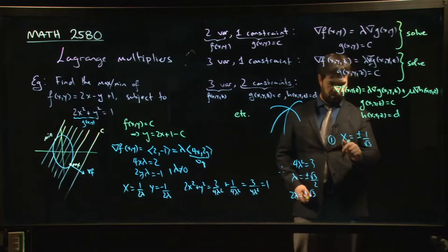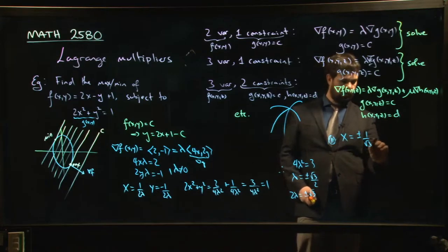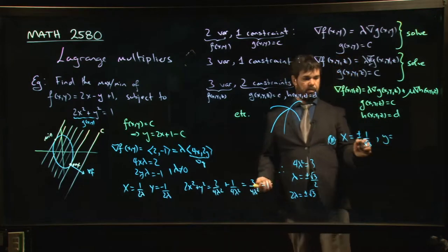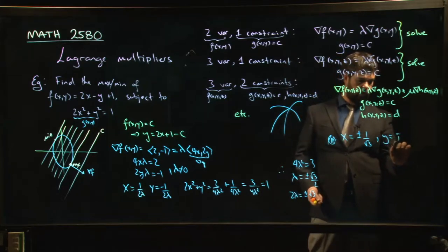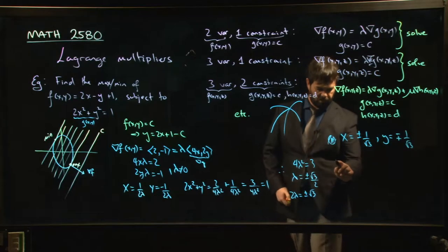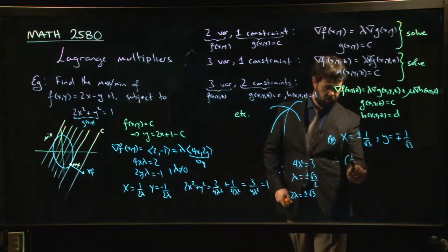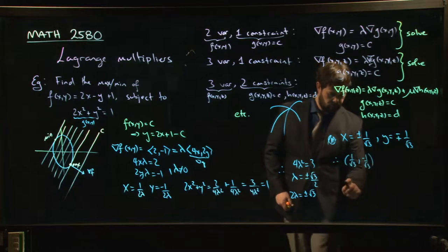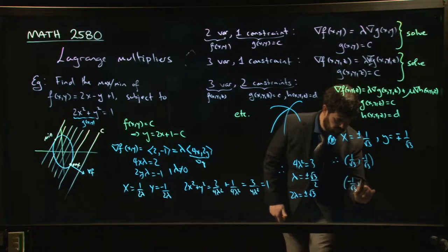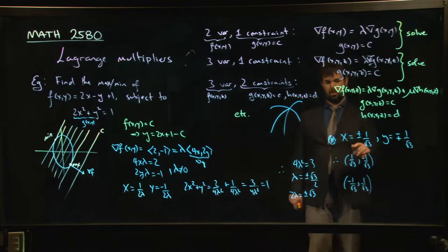Y will be sort of, it's the opposite sign. So y is minus plus 1 over root 3. So I get two points. I get either 1 over root 3, minus 1 over root 3 or I get minus 1 over root 3 and 1 over root 3.